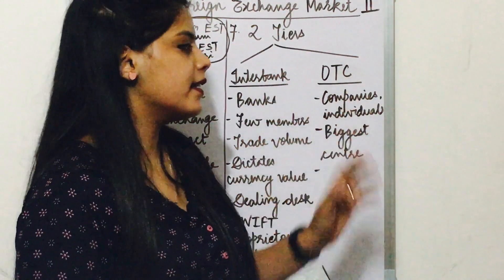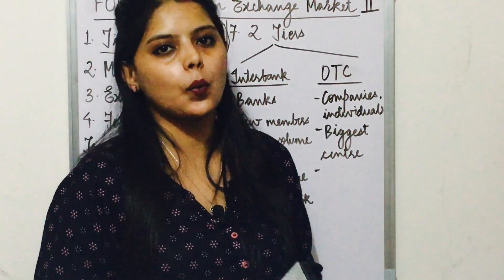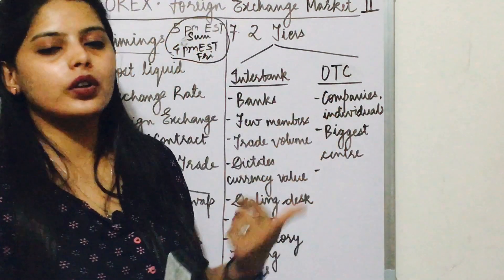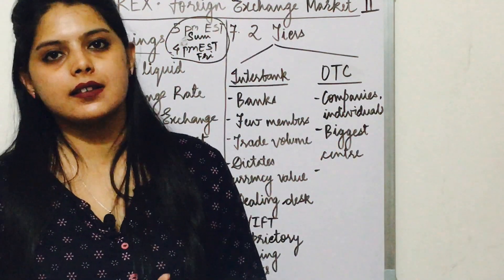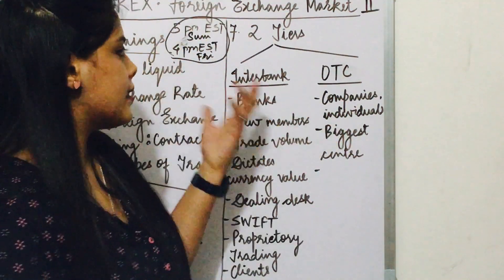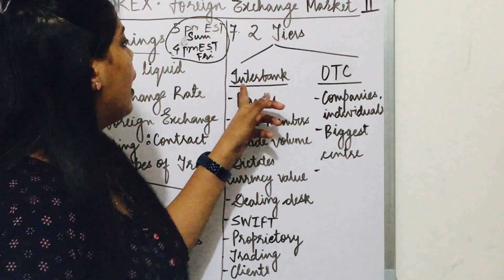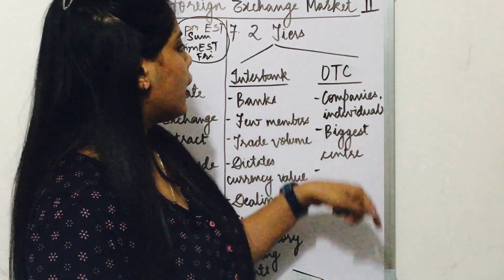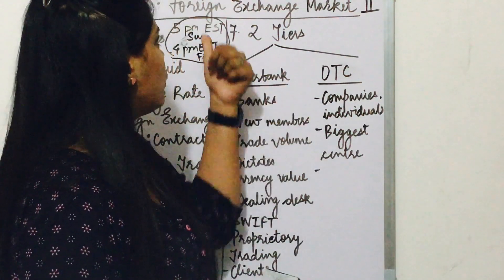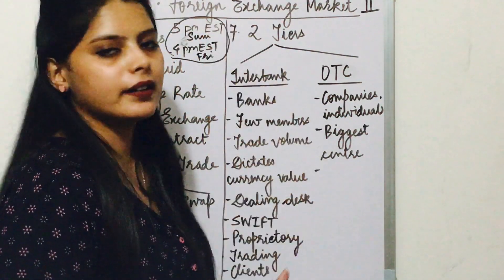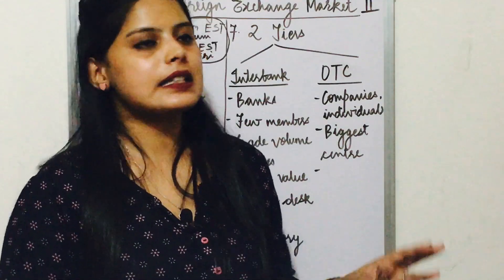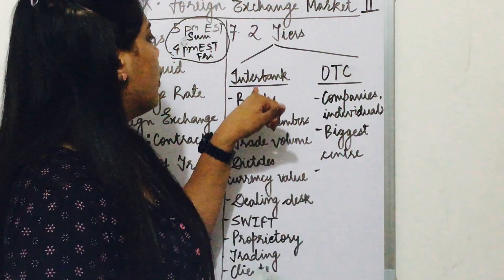There are two tiers of the foreign exchange market. First is interbank, and second is OTC — that is, over the counter, as we have seen in the last video. Interbank and OTC are the two tiers through which trading in the foreign exchange market actually takes place.